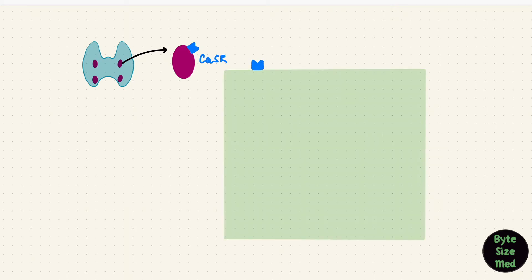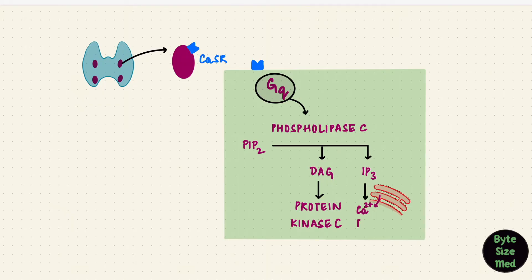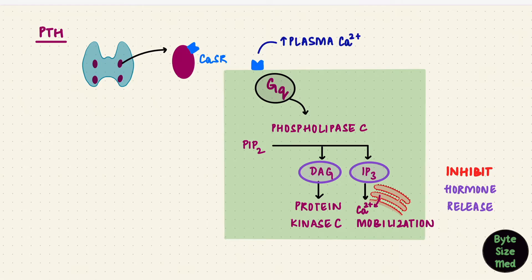The G protein activates phospholipase C. That converts phosphatidylinositol-4,5-bisphosphate into diacylglycerol and inositol triphosphate, DAG and IP3. DAG activates protein kinase C. IP3 mobilizes calcium out of the endoplasmic reticulum. Now these two usually would stimulate the release of a hormone. But with PTH, it's the opposite. They inhibit the release of the parathyroid hormone. When the plasma calcium is high, calcium binds to that receptor and PTH secretion reduces.